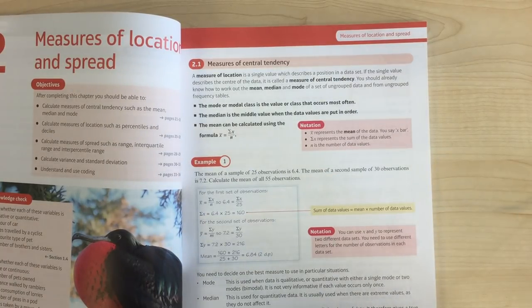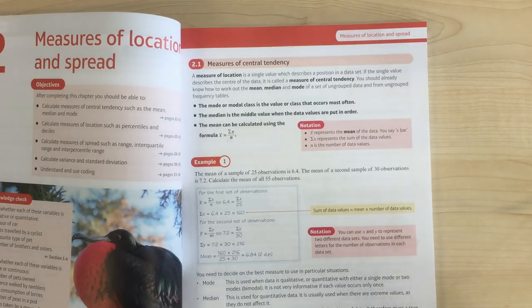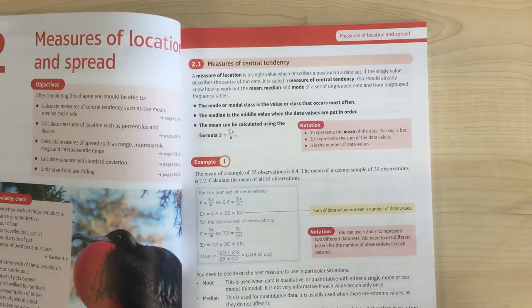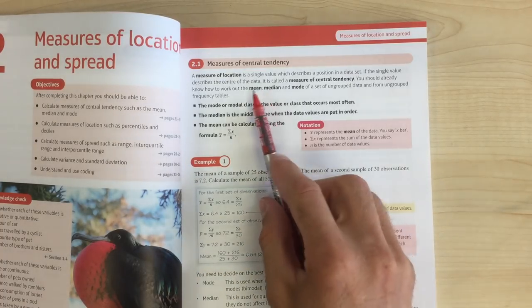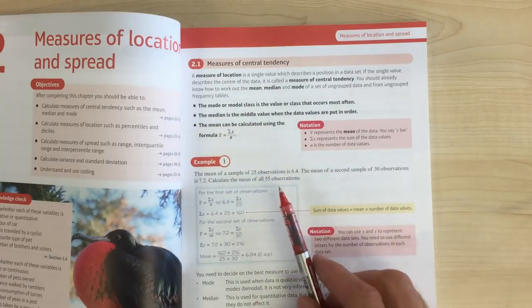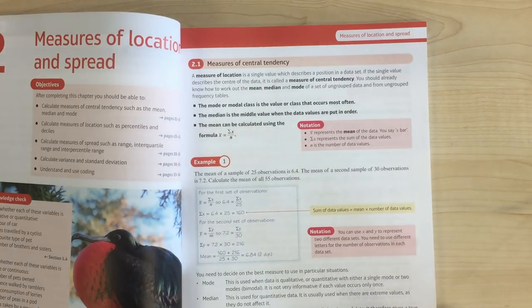So in chapter 2, section 2.1, there is quite a bit of material which will be familiar from pre-A-level courses. There might be a bit of new notation and a bit of new nomenclature as well. So first of all, measures of location and measures of spread is what we're going to be talking about here.